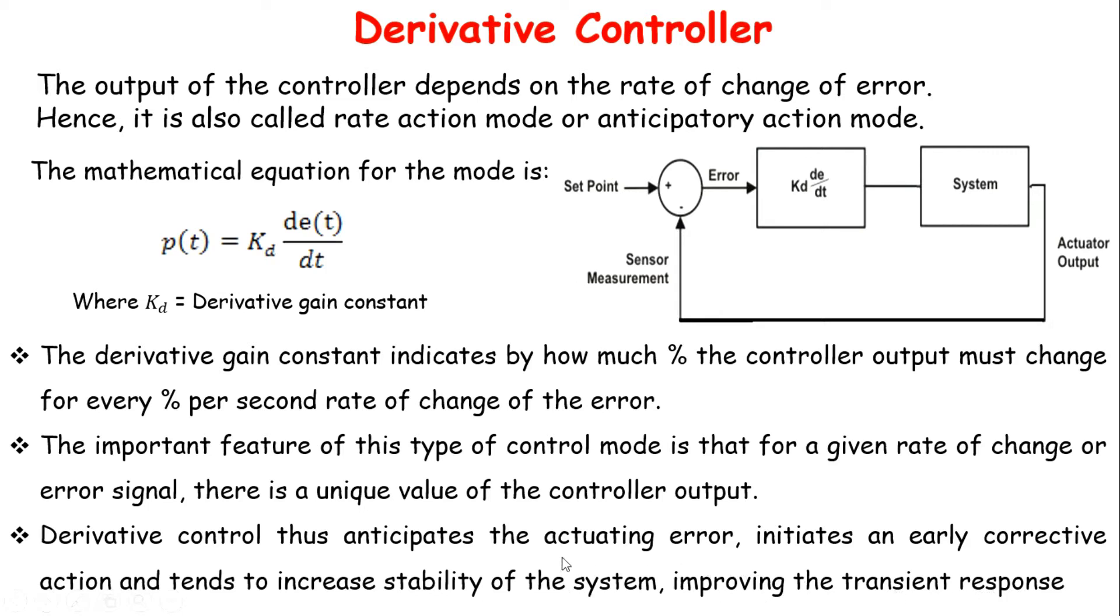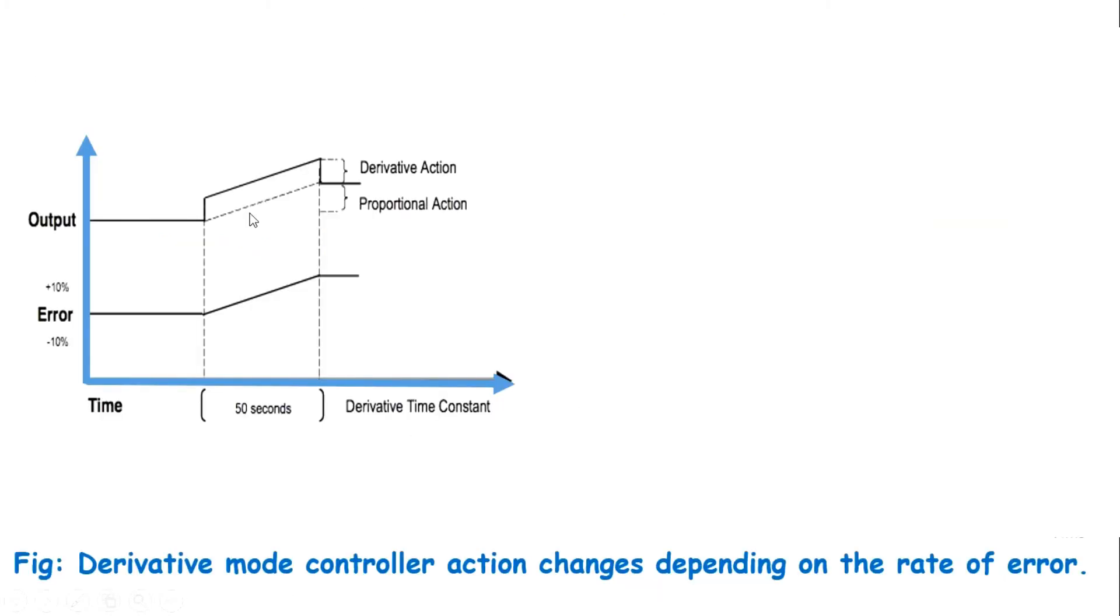The amount of derivative added to the control output is based on a time unit. Figure shows how derivative acts as a proportional band.